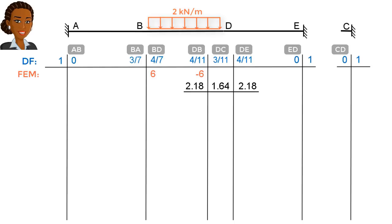We then balance joint B. Since all the joints are balanced, we determine the carryover moments and add them to the table, like this.